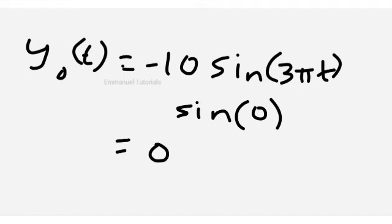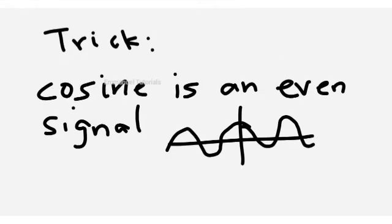Hope you understood that. We have found both the even and odd components. Now we come to the trick which can be used to solve this example easily — very useful for MCQ questions and competitive exams. To use this trick you need to know whether the original signal is even or odd. We have already seen how to determine that in one of our previous videos.